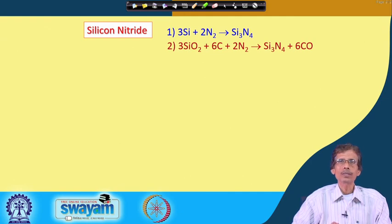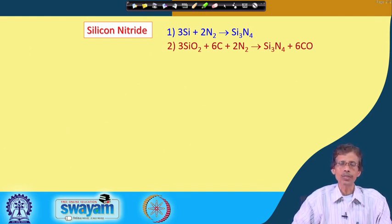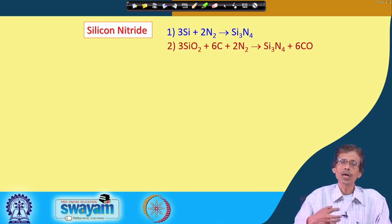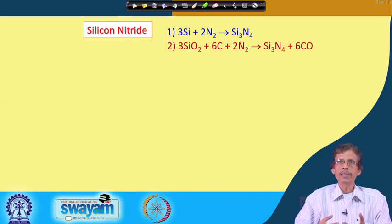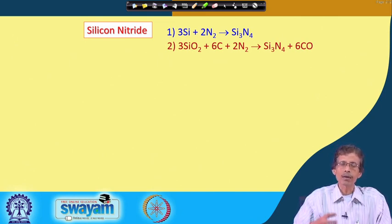Another route uses SiO2 with carbon in the presence of nitrogen gas. The silicon carbide intermediate formed can react quickly with nitrogen to form silicon nitride. So SiO2 + C + N2 can give Si3N4 via a reactive intermediate where the silicon carbide intermediate reacts with nitrogen before it fully stabilizes.